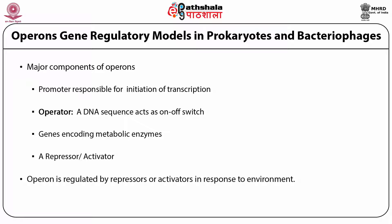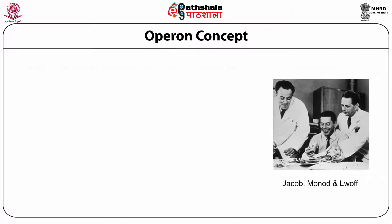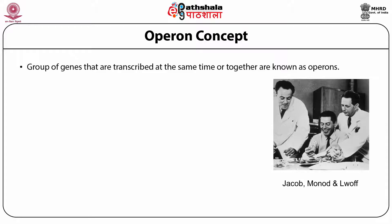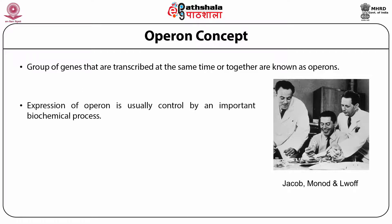Operon is regulated by repressors or activators in response to the environment. Groups of genes that are transcribed at the same time or together are known as Operons. Expression of an Operon is usually controlled by an important biochemical process. Operons are present only in prokaryotes.